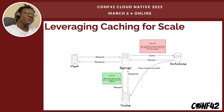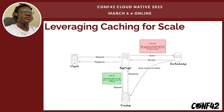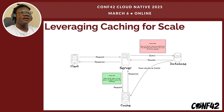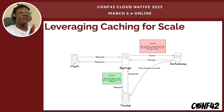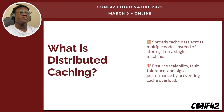If you're wondering why retrieving data from the cache is faster than from the database, it's simply because data in the cache is usually written to a faster storage medium like memory, unlike database data which is written to disk.